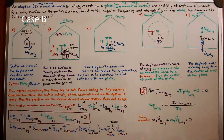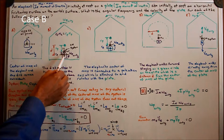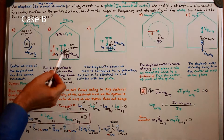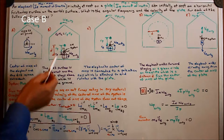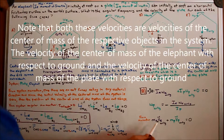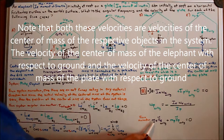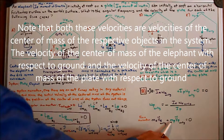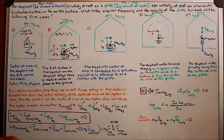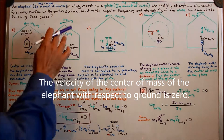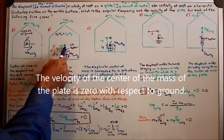For Case B, we were told the elephant's center of mass remained at the same place above the ground, so it had no velocity with respect to ground. Since we know the center of mass of the system can't change due to no net forces, therefore the center of mass of the plate has to stay in the same place too. Using momentum conservation: the momentum of the elephant is its mass times velocity (which is zero), so the velocity of the plate must also be zero.